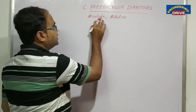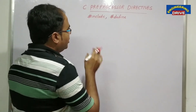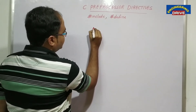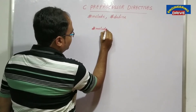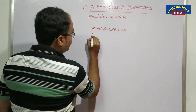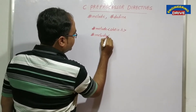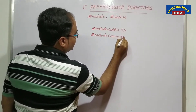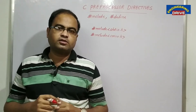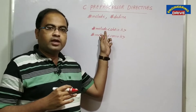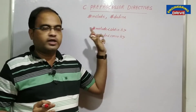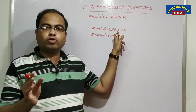Let us first concentrate on what hash include is and what is the use of this preprocessor directive. In every C program we make use of two header files. We write them at the top of the program, such as hash include less-than stdio.h greater-than, and one more header file hash include less-than conio.h greater-than. These are the two header files we generally use in our programs.